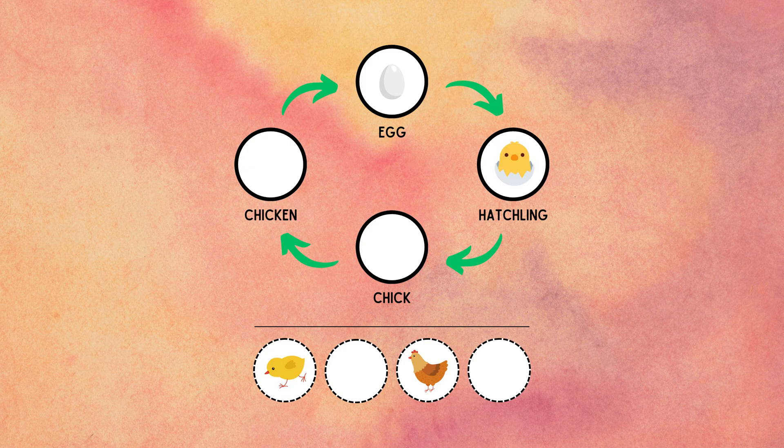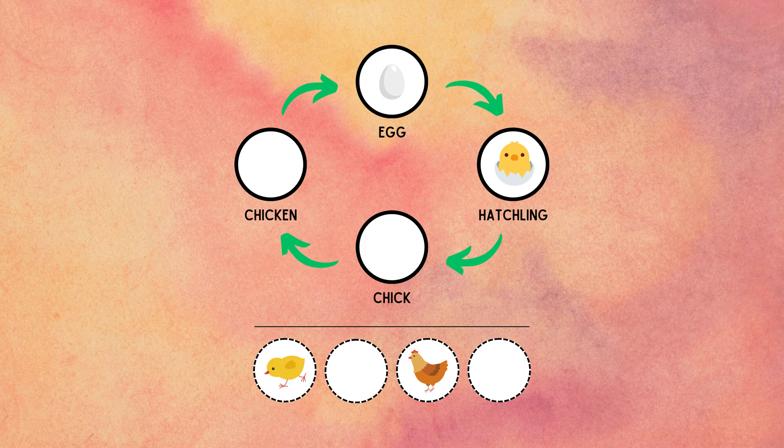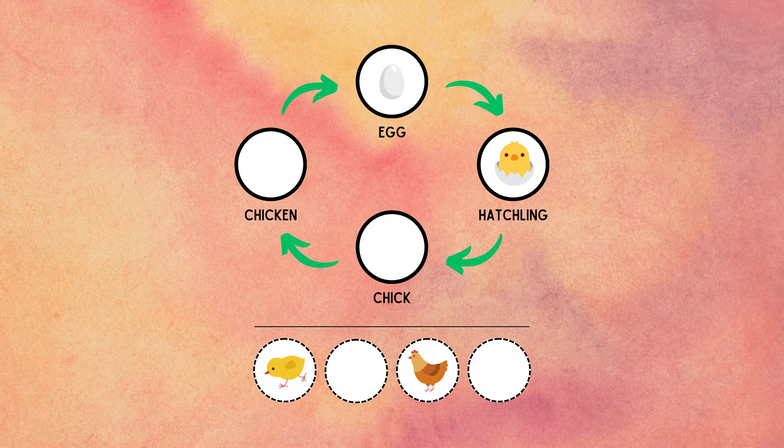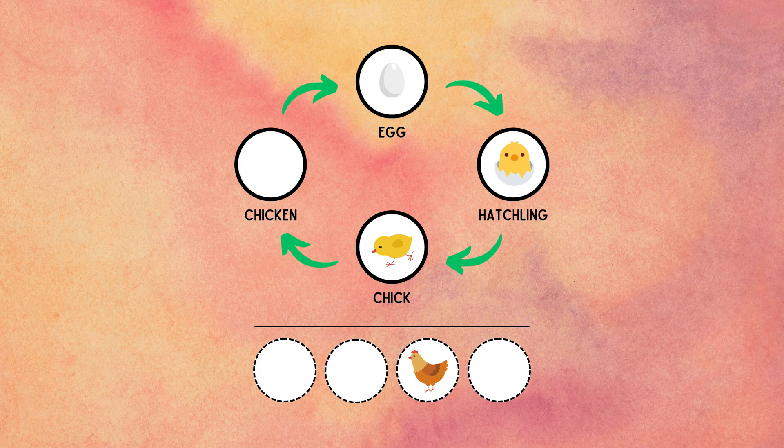After the incubation period, the fully developed chick will start breaking out of its shell using its egg tooth, a small pointed protuberance on its beak. This process is called hatching. Once hatched, the baby chicken is called a chick.